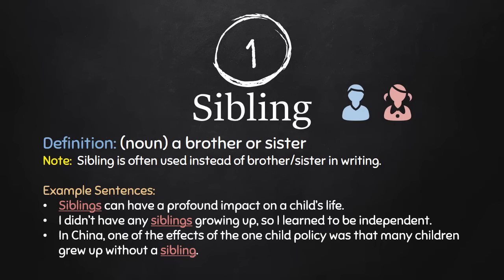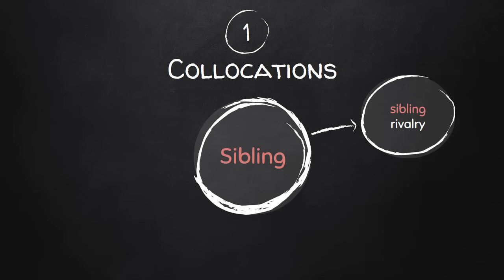We use siblings with an S in the first two sentences, but we can also use it like in the last sentence with 'a', meaning one sibling — one brother or one sister. Next, let's look at collocations. Sibling rivalry is a common collocation — you'll see these two words together. Sibling rivalry means when you have a brother or sister who likes to compete with each other in lots of different things: maybe in sports, eating food at the dinner table, or in business. When they always like to compete, it's called a sibling rivalry.